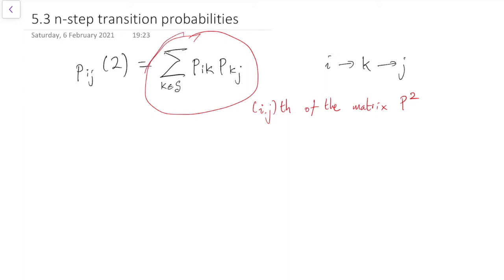And that's precisely what this sum here is. That's exactly the rule for how you multiply together a matrix by another matrix. Here, both matrices are P.